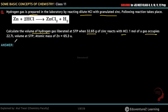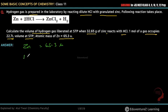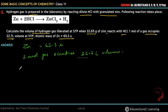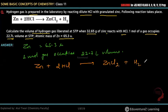One mole of gas occupies 22.7 liter volume at STP. Atomic mass of zinc is 65.3. Now, some things are given: atomic mass of zinc is 65.3, and one mole of gas occupies 22.7 liter volume. The reaction is: Zn reacts with 2 SCL to give ZnCl2 plus H2 gas.